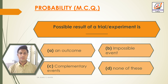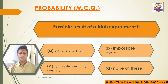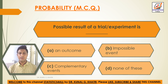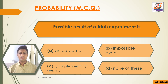Next question: possible result of a trial or experiment is — Option A: outcome. Option B: impossible event. Option C: complementary events. Option D: none of these. The answer is Option A — an outcome is a possible result of a trial or experiment.